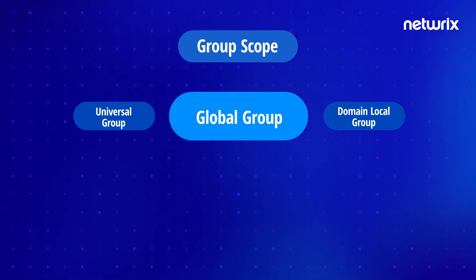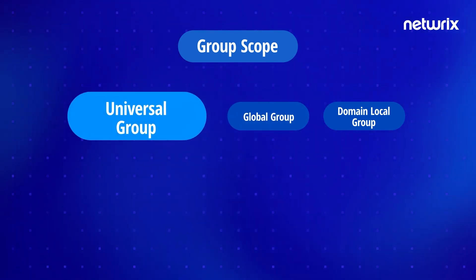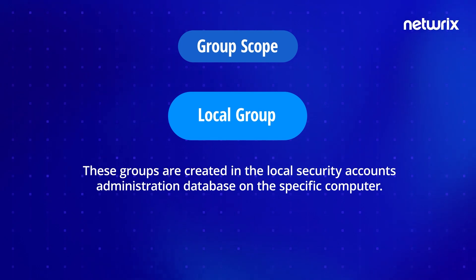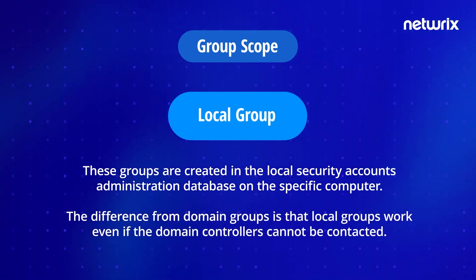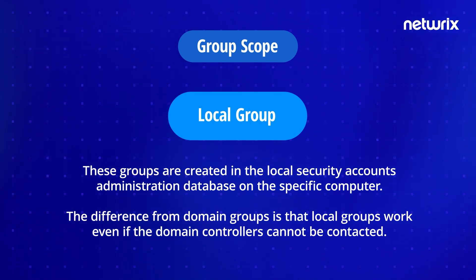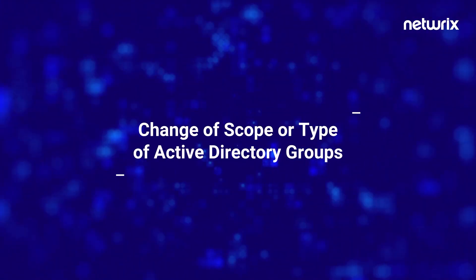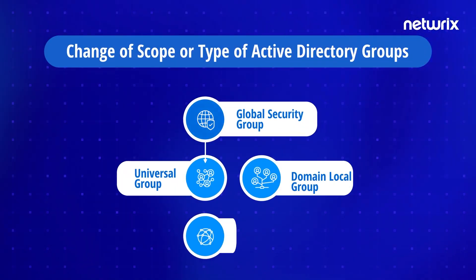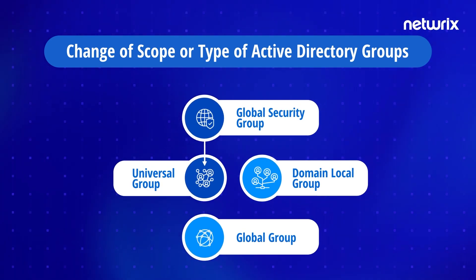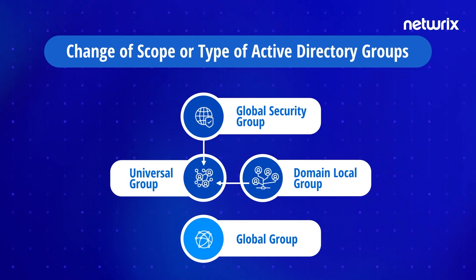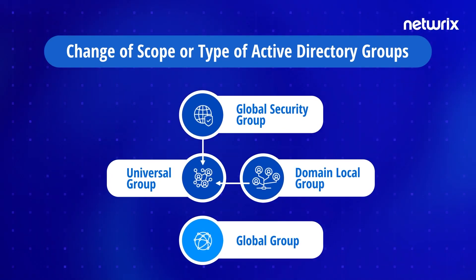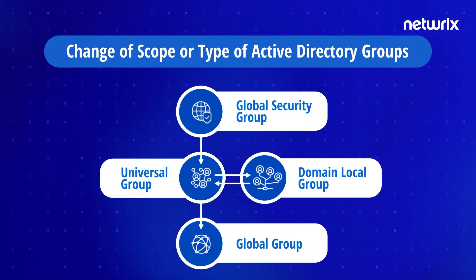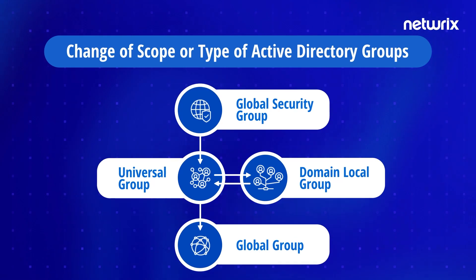You should use global groups if you have trust relationships and universal groups if you do not care about trust relationships. There are also local groups, which are created in the local security accounts administration database on the specific computer. The difference from domain groups is that local groups work even if the domain controllers cannot be contacted. You can change the Active Directory group scope or type, but there are several conditions: you can convert a global security group to a universal group if it is not part of another global group; you can convert a domain local group to a universal group if another local domain group is not a member of it; you can convert a universal group to a domain local group without any restrictions; and you can convert a universal group to a global group if it does not contain another universal group as a member.